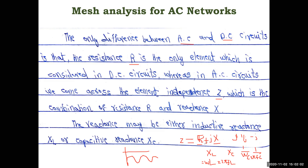In the problem they will directly give you the impedance, either resistance in series with a reactive part or in parallel — based on that we find the impedance term. To summarize: reactance may be either inductive reactance X_L or capacitive reactance X_C. X_L = ωL = 2πfL, and capacitive reactance is written as −jX_C = −1/(ωC) = −1/(2πfC), where ω is the angular frequency and C is the capacitance.